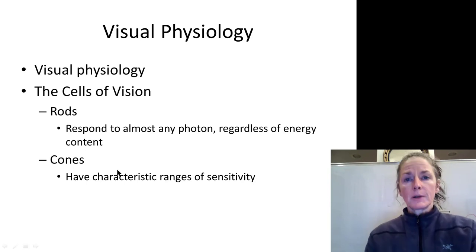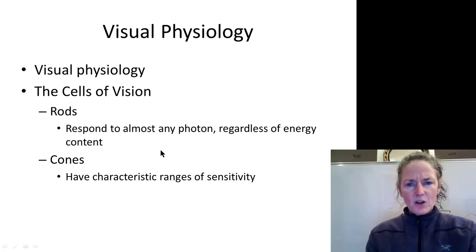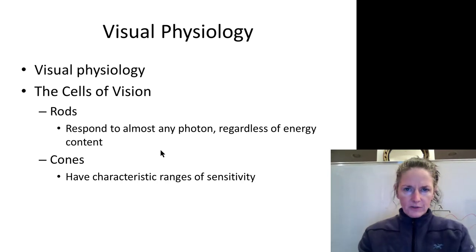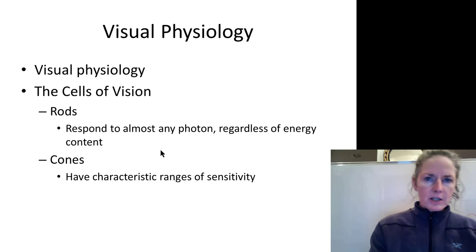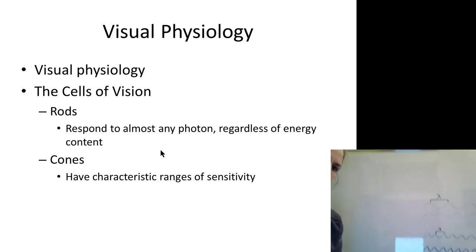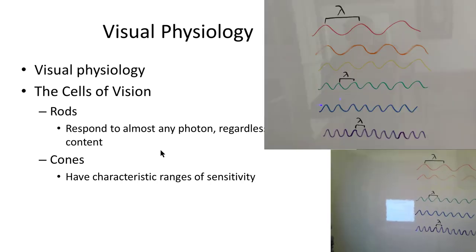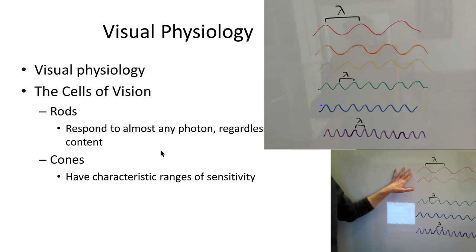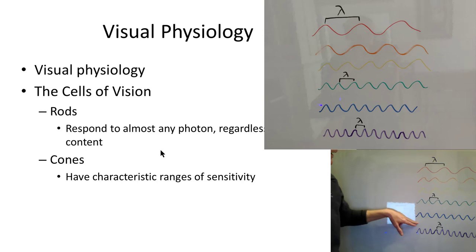Now we've got to talk about light itself. There are two ways to think about light: you can think of it as a particle, or as a wave. On the board, I've drawn waves of different wavelengths and colors. We have high-energy colors like violet and low-energy colors like red. You've probably heard of Roy G. Biv — red, orange, yellow, green, blue, indigo, violet — these are the colors of the rainbow.